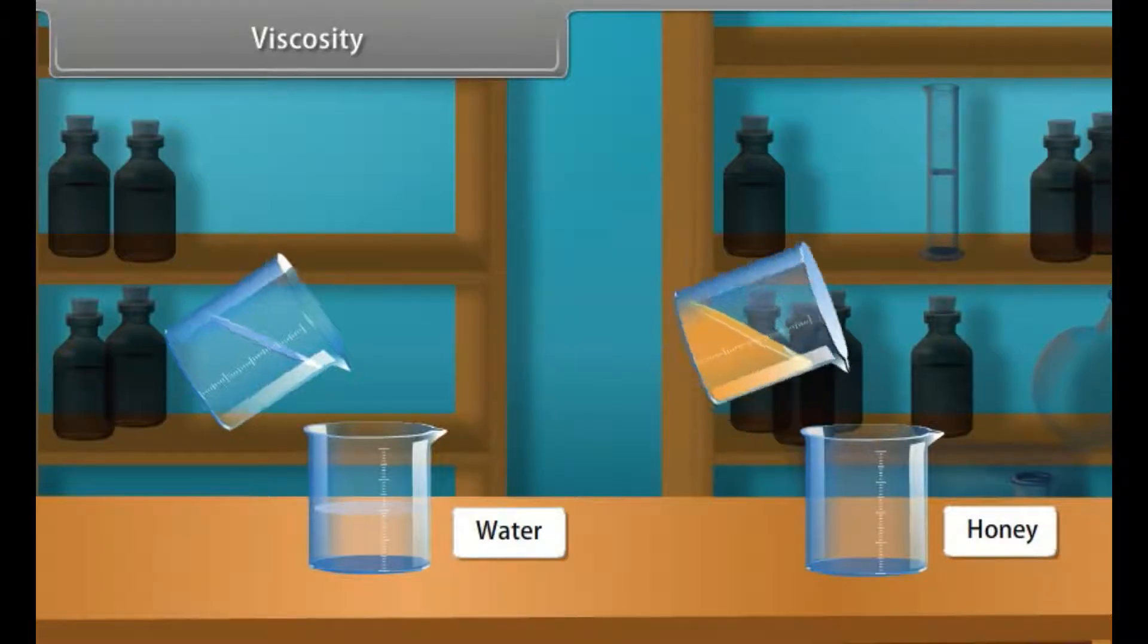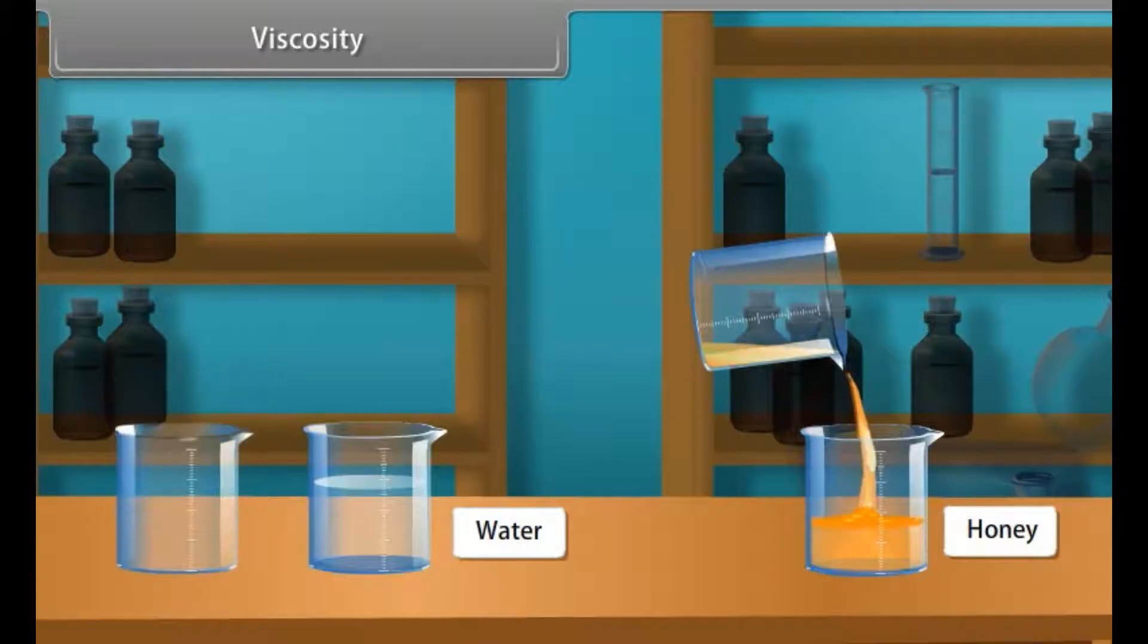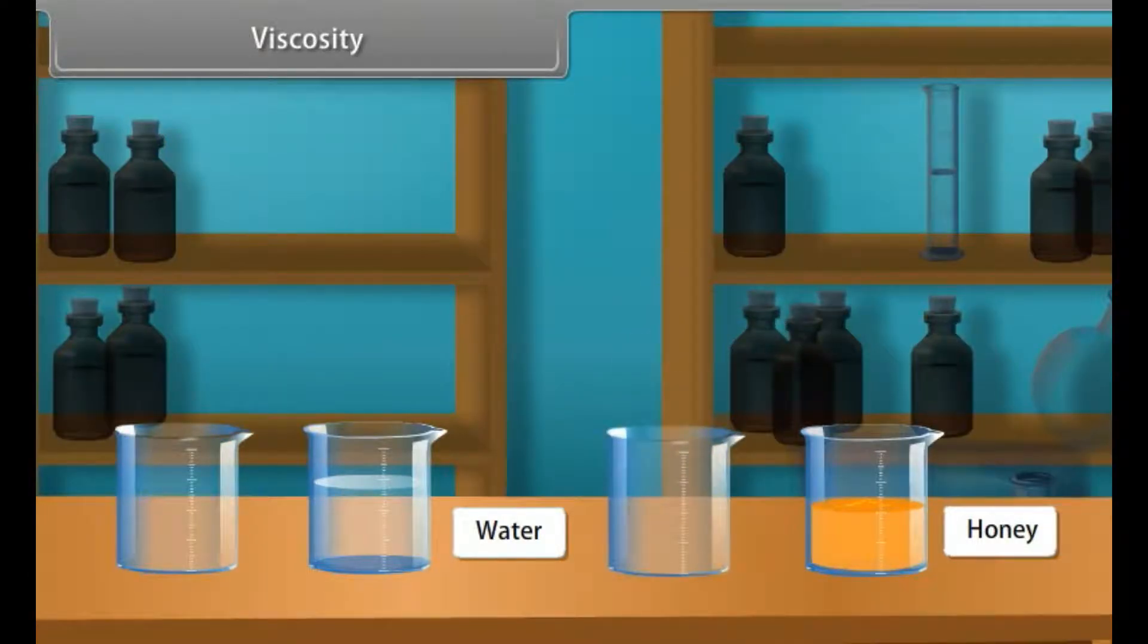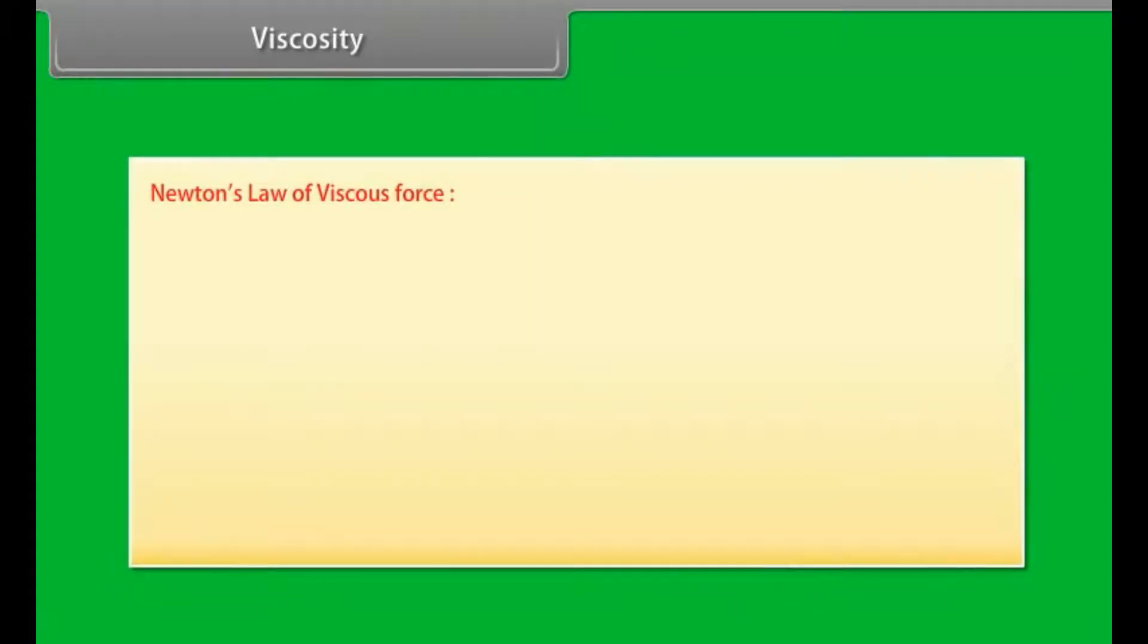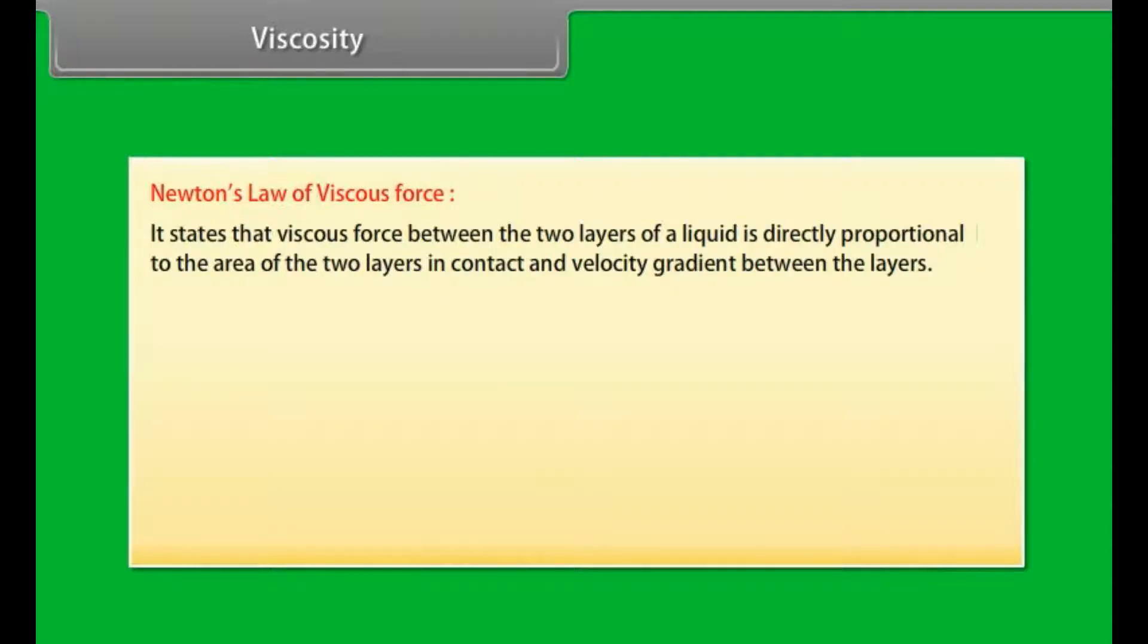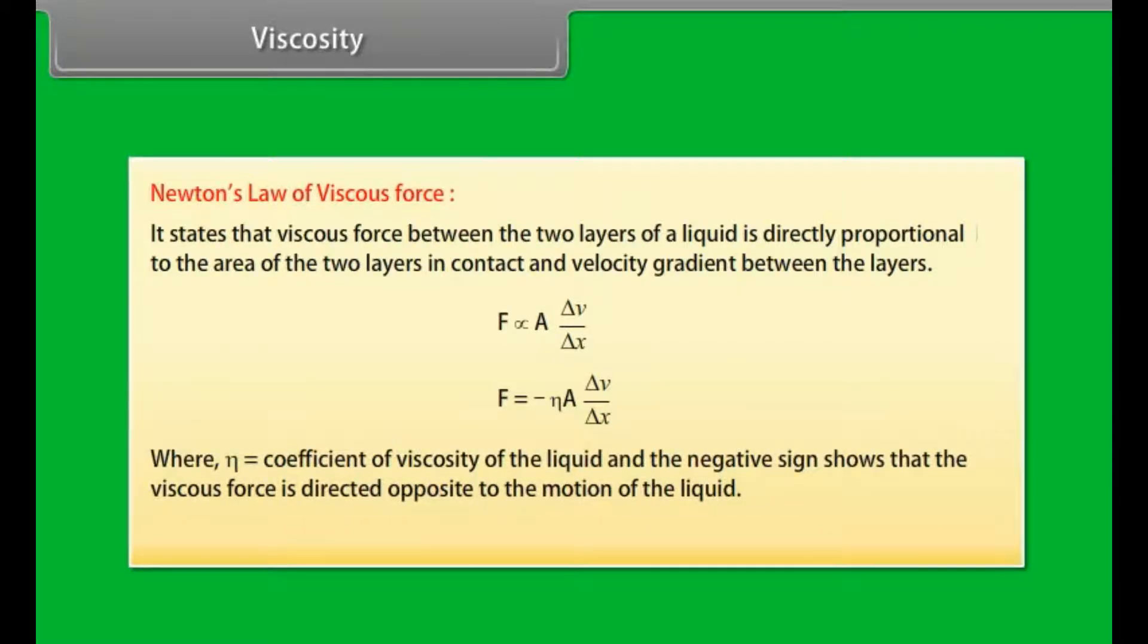Viscosity. It is defined as the property of a liquid by virtue of which an internal resistance comes into play which tries to destroy the relative motion between the layers. This internal resistance acts tangentially on the layers of the liquid. Newton's law of viscous force states that viscous force between the two layers of a liquid is directly proportional to the area of the two layers in contact and velocity gradient between the layers. F ∝ A(ΔV/ΔX). This equation can be written as F = -ηA(ΔV/ΔX), where η is the coefficient of viscosity of the liquid and the negative sign shows that the viscous force is directed opposite to the motion of the liquid. Its dimensional formula is ML⁻¹T⁻¹.